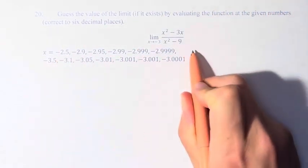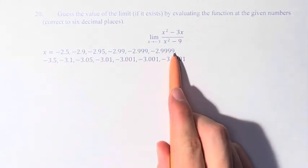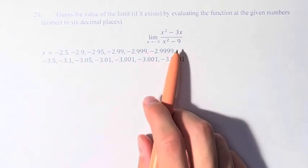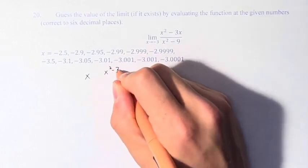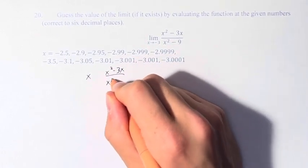So first we have these values, which are approaching negative 3 from the right. We have x and x squared minus 3x over x squared minus 9.